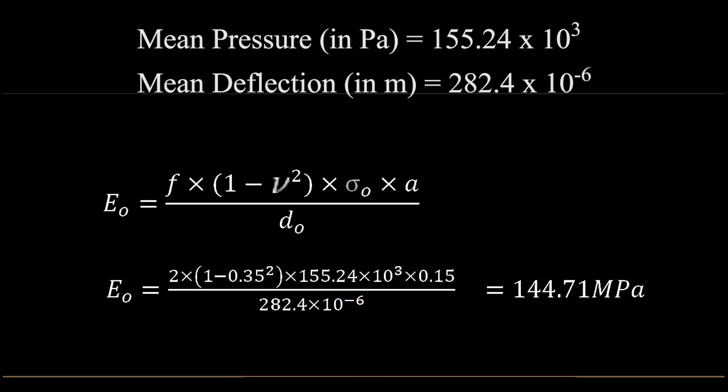Here, F is the factor of stress distribution which is taken as 2. Mu is the Poisson ratio of soil which is taken as 0.35. Sigma knot is the stress under plate. D knot is the center deflection and A is the radius of plate.